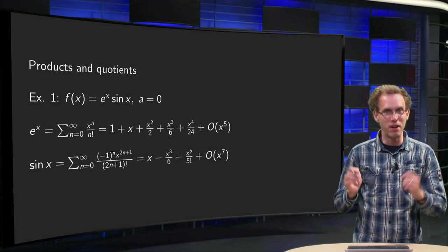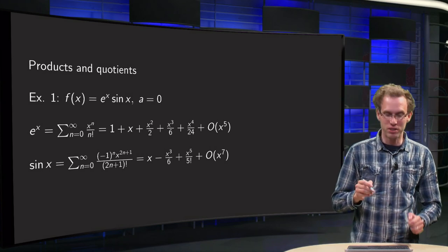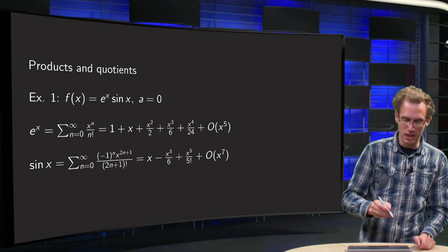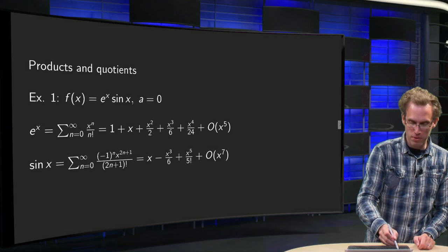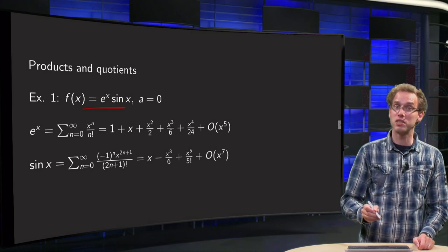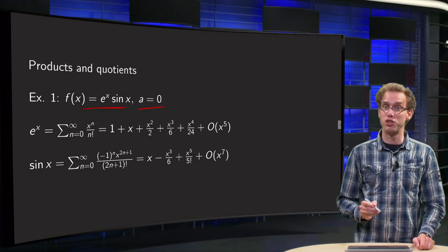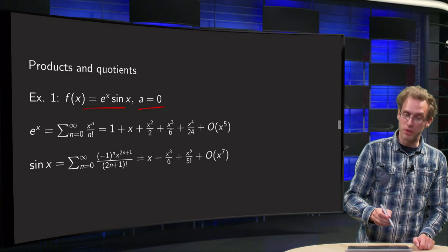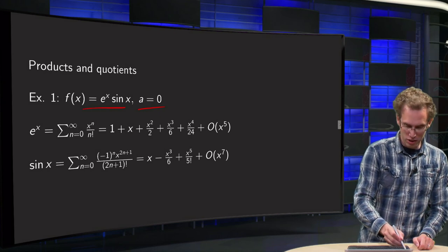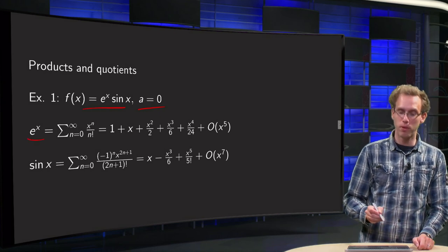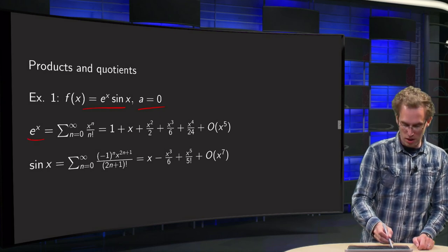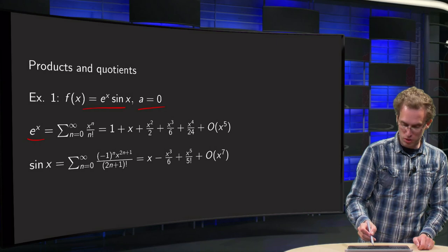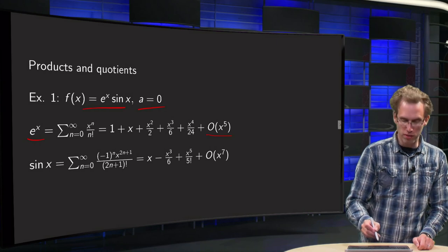So let's take a very easy product, and then you will already see that it becomes complicated. We take e to the power x times sine x around a equals zero. We know the series of e to the power x, and we do it up to order x to the power 5.